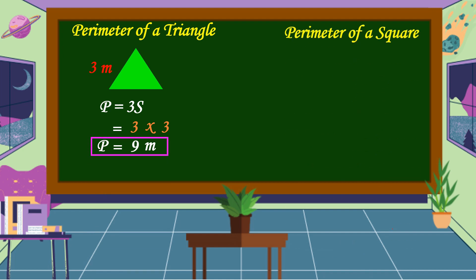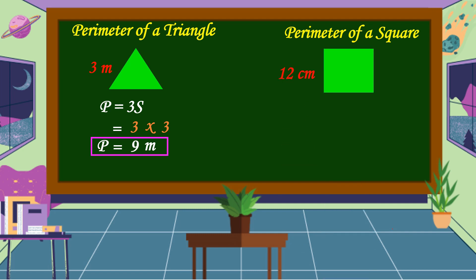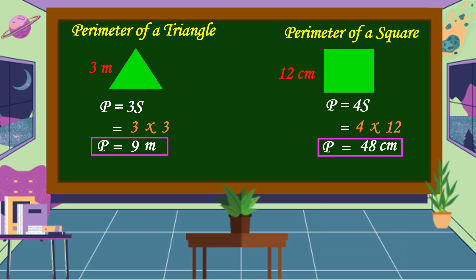Next, we're going to solve the perimeter of a square if one side measures 12 centimeters. The formula is P = 4 times the side. Substituting: 4 times 12 is equal to 48. Copy the unit of measurement, which is centimeters. Therefore, the perimeter is equal to 48 centimeters.